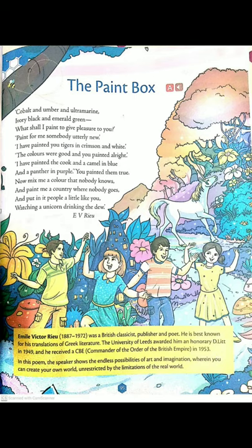The poet continues: 'I have painted the cook and a camel in blue, and a panther in purple.' He has painted a camel and a cook in blue color, and a panther — which is an animal like a leopard — in purple color. The friend responds: 'You painted them true,' meaning wow, you painted them really well.